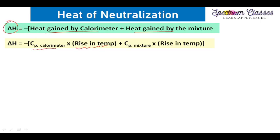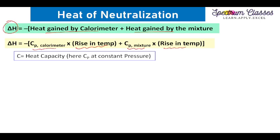This formula can be written as: heat gained by the calorimeter equals the heat capacity of the calorimeter multiplied by the rise in temperature (ΔT = T₂ − T₁). Similarly, heat gained by the mixture equals the heat capacity of the mixture multiplied by ΔT. The symbol C stands for heat capacity, with subscript p indicating constant pressure, related by the equation q = C × ΔT.